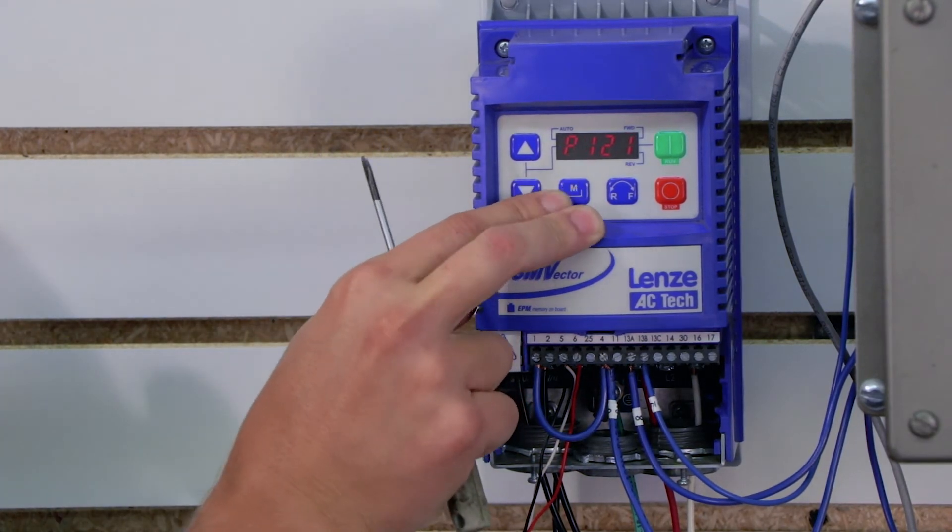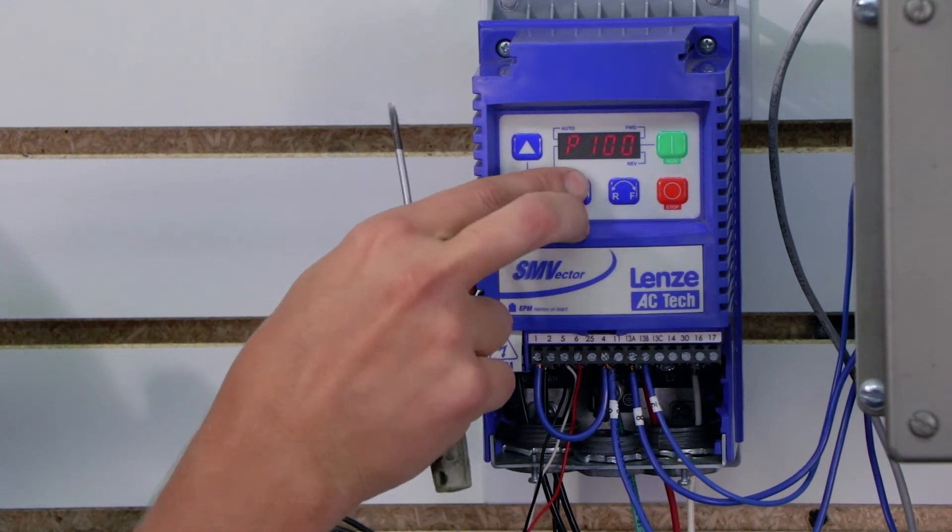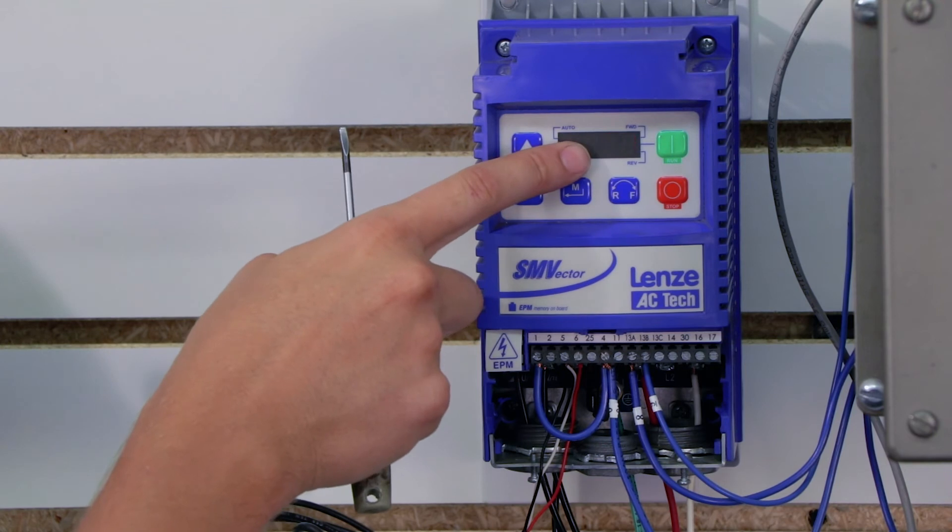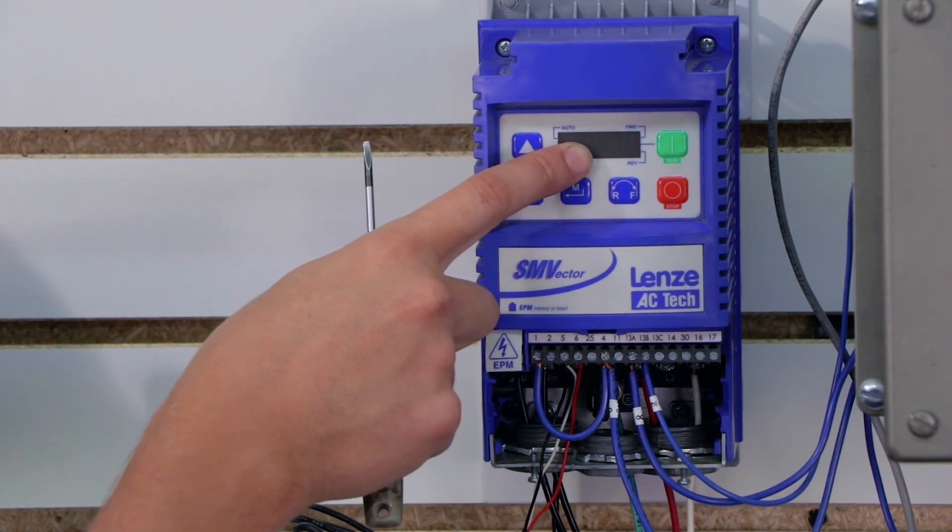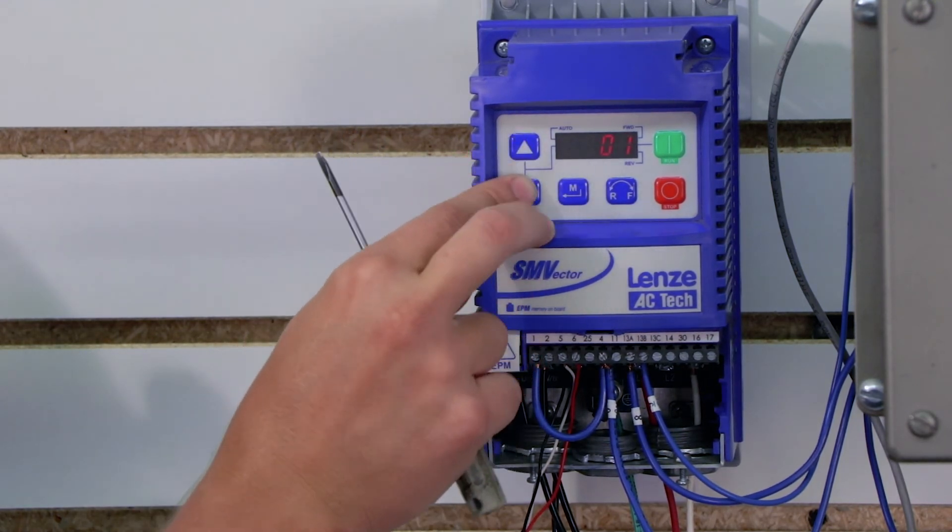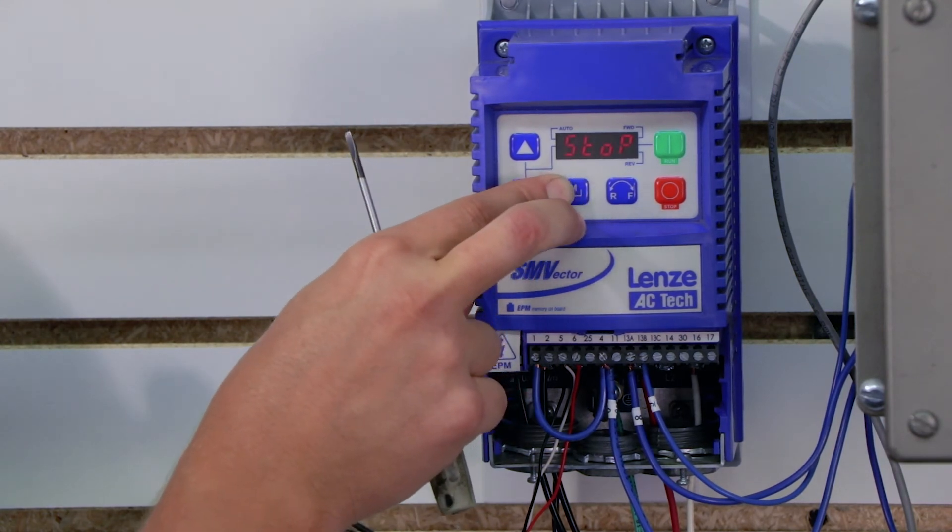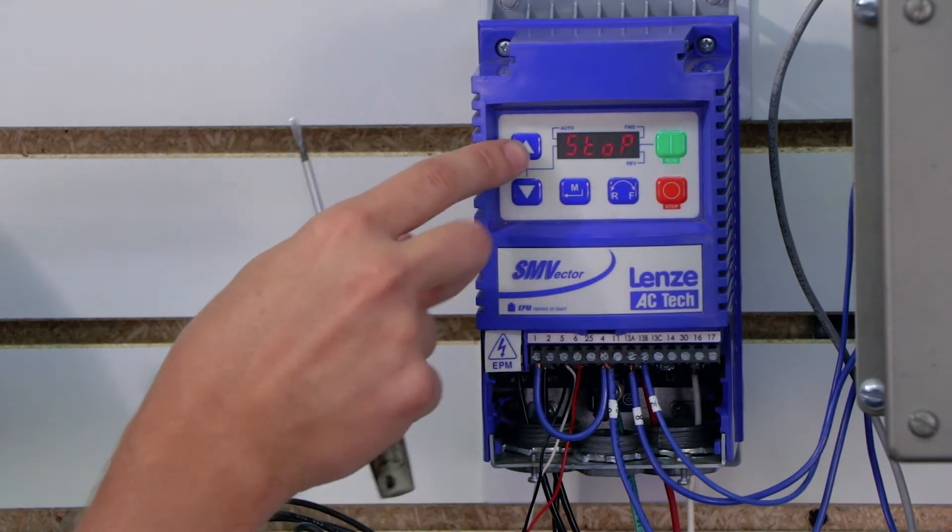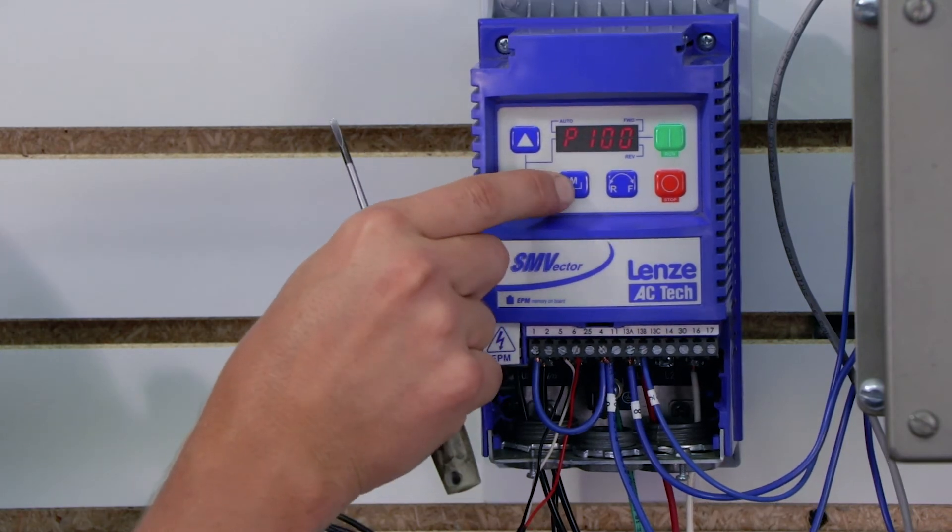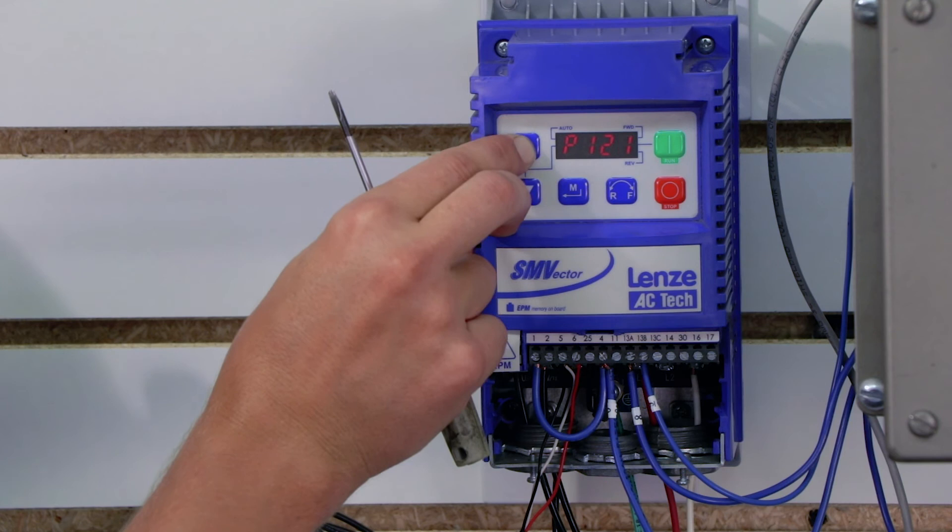First thing we need to do is press the menu button and go down to parameter 100 just to verify that we are in terminal strip control. It's got to be set to 01. If it's not set to 01 then it's not in terminal strip control. If it's set to 00 it's in keypad control which means you can only start and stop it from the keypad. So I'm going to set it to 1 and press the menu button again and then I'm going to press the menu button a third time to bring up the parameters again and I'm going to go up to parameter 121.